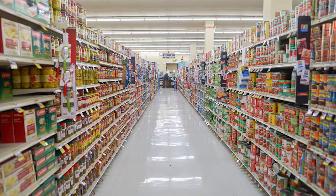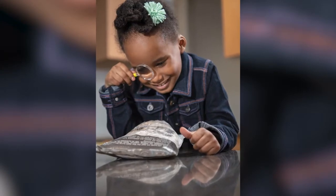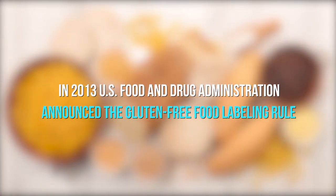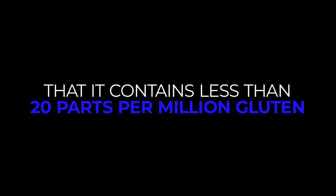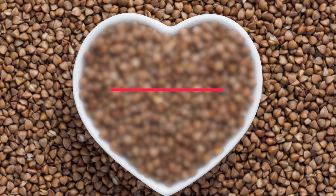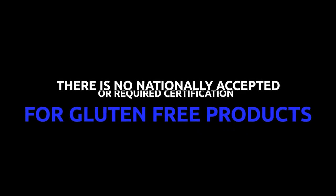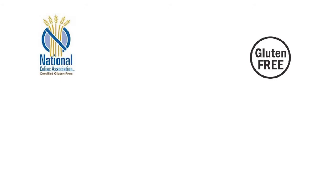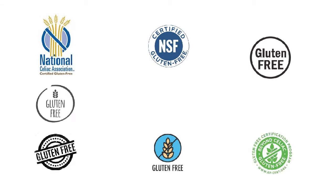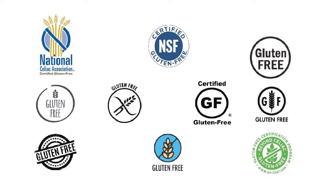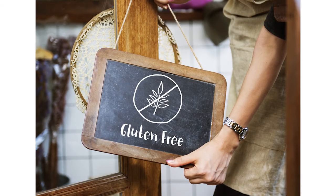There are thousands of gluten-free products in grocery stores. When I go shopping with my mom, we always read the ingredients list and look for the gluten-free label — it helps me learn. In 2013, the U.S. Food and Drug Administration announced the gluten-free labeling rule. Under this rule, if a product is labeled gluten-free, it is claiming that the product contains less than 20 parts per million gluten. Remember, this rule is voluntary, so even if a product is not labeled gluten-free, it may still be. There is no nationally accepted or required certification for gluten-free products. There are a number of third-party companies that charge manufacturers a fee to test their products for gluten. If a product meets the certification standard, the manufacturer is able to use the certifier's chosen gluten-free symbol. Assuming a product meets the FDA's standard of less than 20 parts per million, the manufacturer can choose to use any form of the words gluten-free on its label.